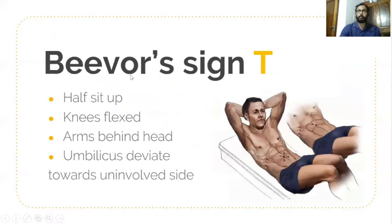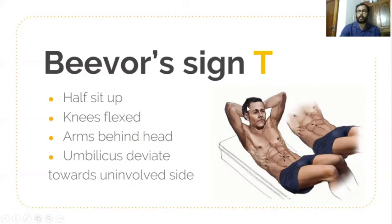For the thoracic spine, Beevor's sign checks the muscle power. Ask the patient to do a half sit-up with knees flexed to 90 degrees and arms behind the head. If there is any pathology affecting the thoracic spine, the umbilicus deviates towards the uninvolved side due to weakness in the involved side muscles. In normal patients, the umbilicus remains on the midline.